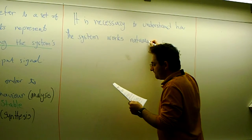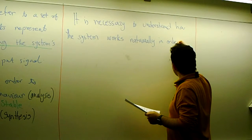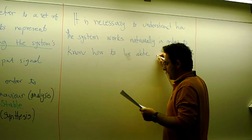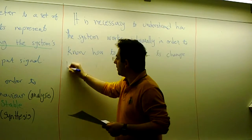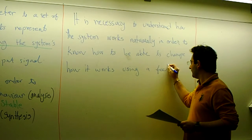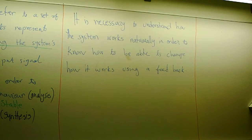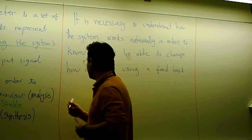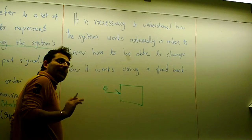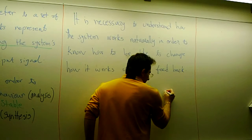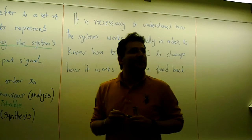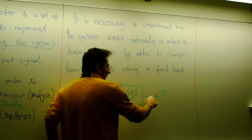These two steps — analysis and synthesis — are very important. It is necessary to understand how the system works naturally in order to know how to change how it works. The cruise control example illustrates this: the angle of the accelerator pedal results in different speeds. We have to know how the car works first, and then we can come up with a feedback system.